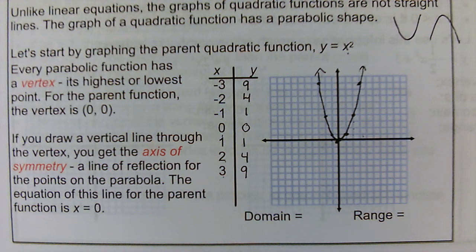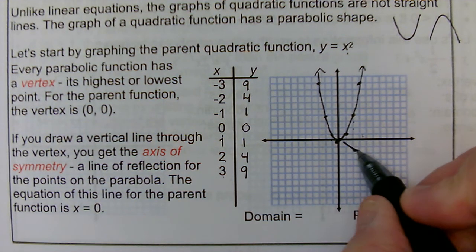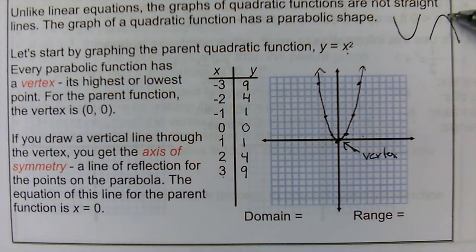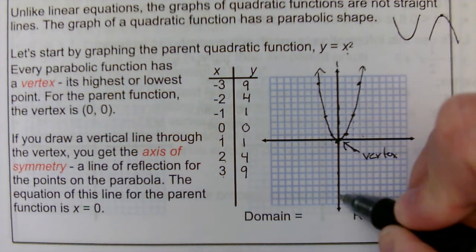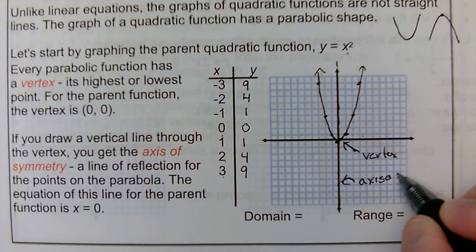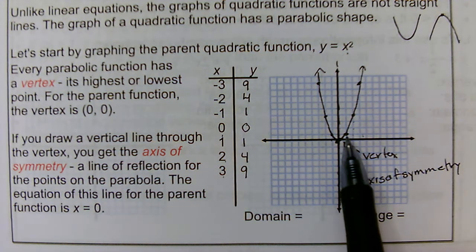When we look at a parabola that's opening up, the lowest point is called the vertex. If we're looking at one that opens down, the highest point would be the vertex. The vertical line that goes through the vertex is called the axis of symmetry, and that means it's a line through which the parabola reflects on itself.